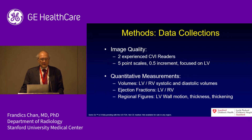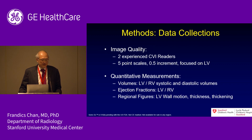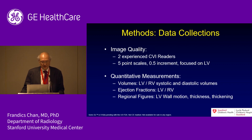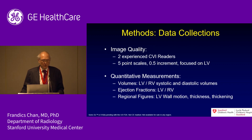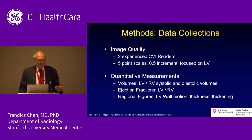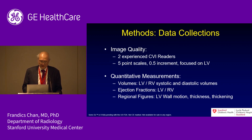Image quality was collected from two experienced CMR readers over a five-point scale in 0.5 increments, focusing on left ventricular performance in the adult population. In the quantitative measurements, we looked at ventricular volumes and ejection fractions, but also regional figures such as wall motion — displacement of a segment of wall — thickness in diastole, and wall thickening as a representation of contraction.